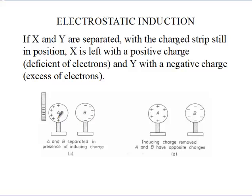After separating them, if we take the charged polythene rod away, A is going to obtain only positive charges and B is going to obtain only negative charges. A is positive because all electrons have left A. B is negative because B has obtained almost all the electrons needed or required.